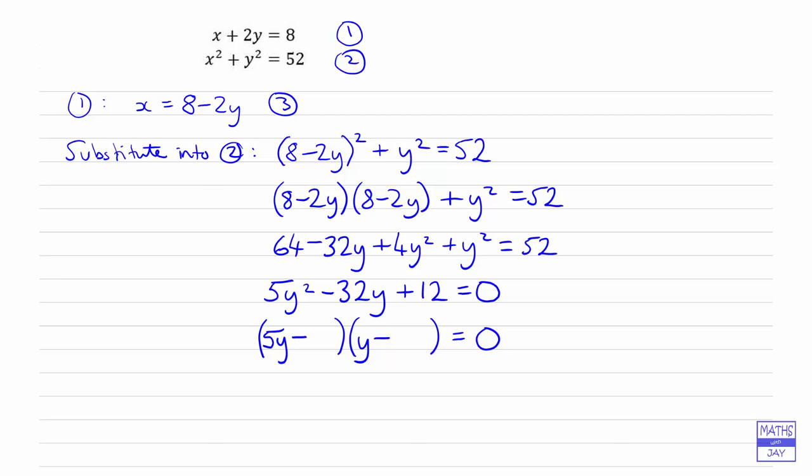We need to think about what numbers we're going to be putting in here. It can't be 1 and 12. Trying out some different possibilities, we can see that it is going to be 2 in there and 6 in there, because minus 2y and minus 6 times 5y comes to minus 32y. This will give us our two solutions: 5y minus 2 is 0 or y minus 6 is 0. So y is either going to be 2 fifths or 0.4, or it's going to be equal to 6.